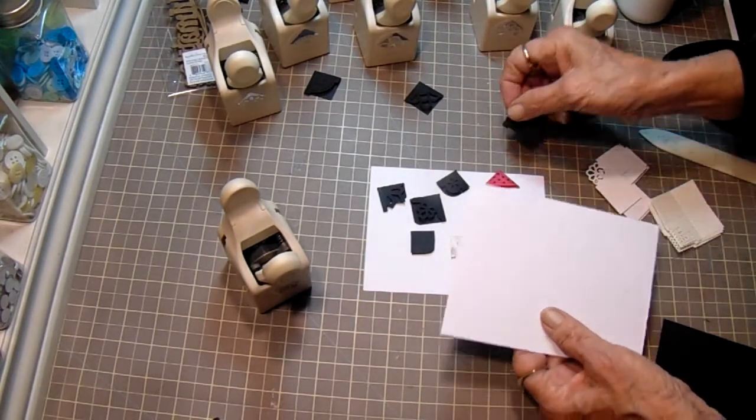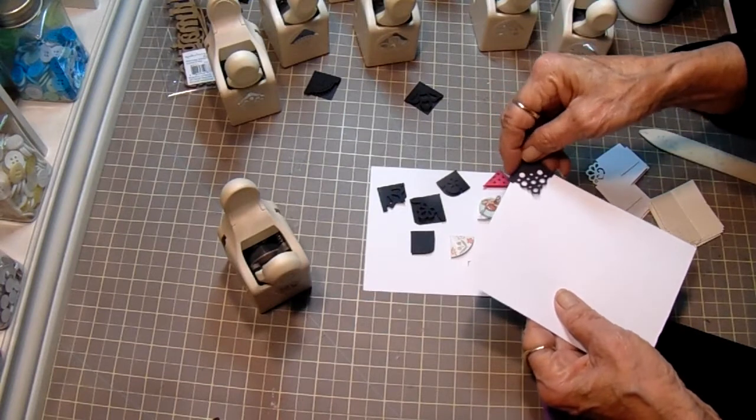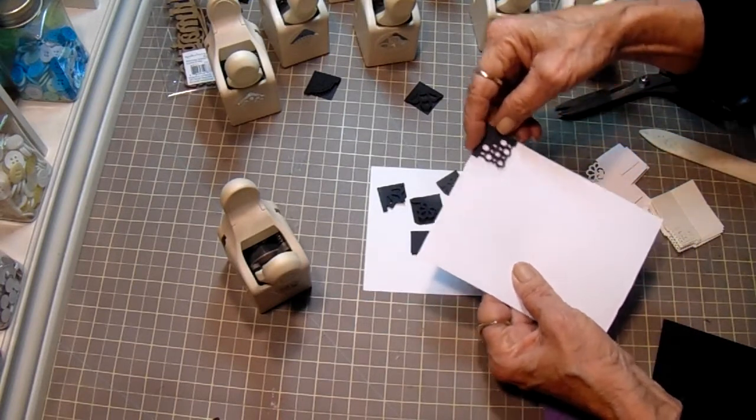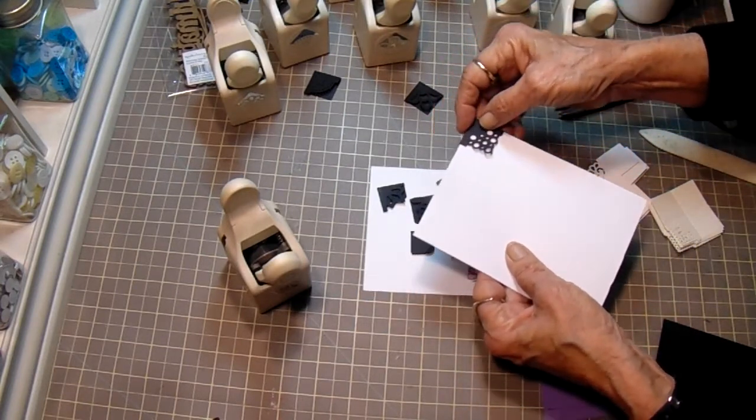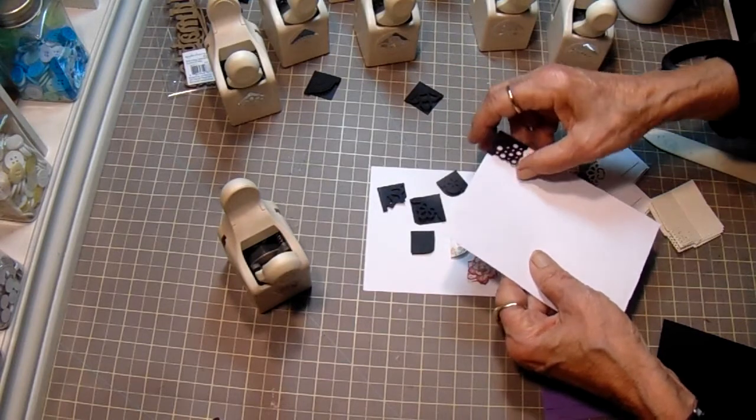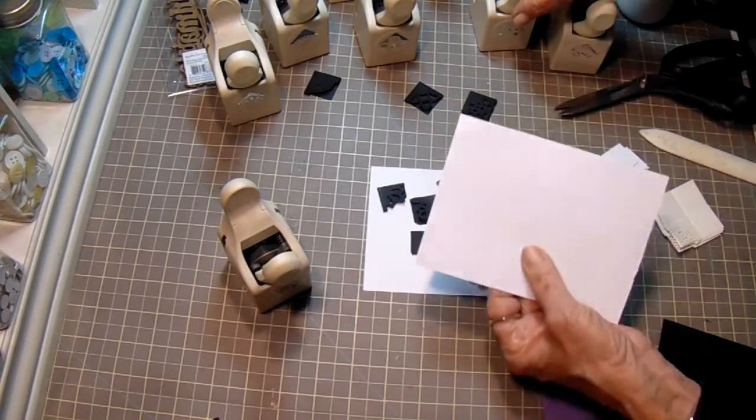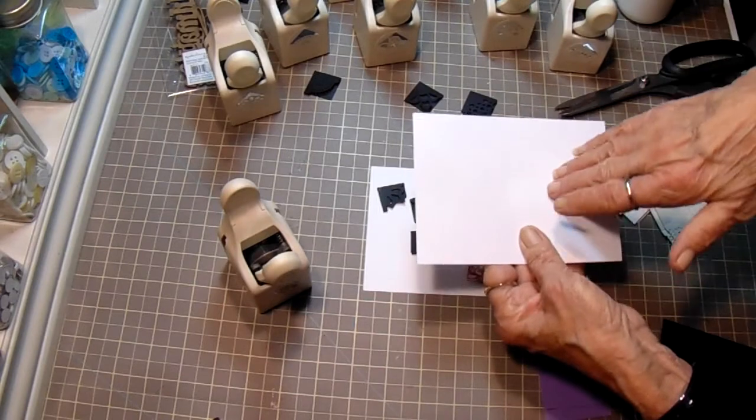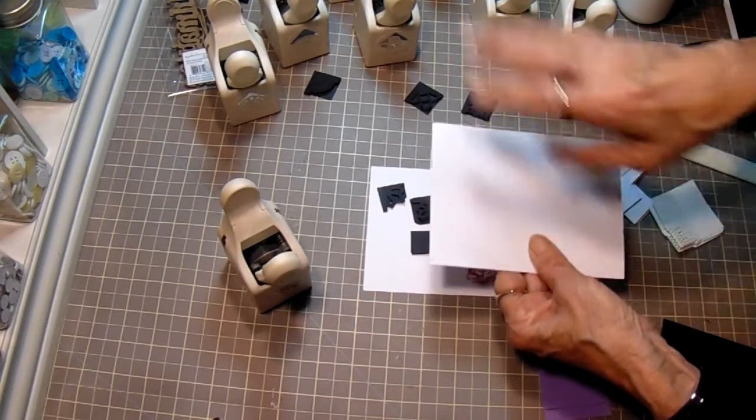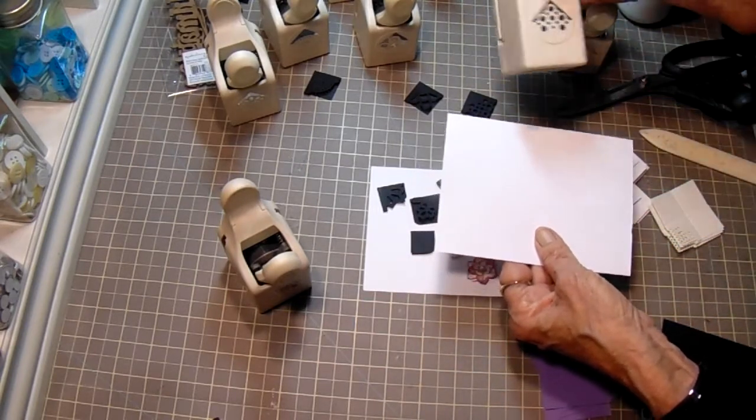Most of them are using Martha Stewart corner punches. And there's one. This one is from this punch. They look cool with one on each corner and then the person you give the book to doesn't have to use glue. They can just stick their photo up under the corners.